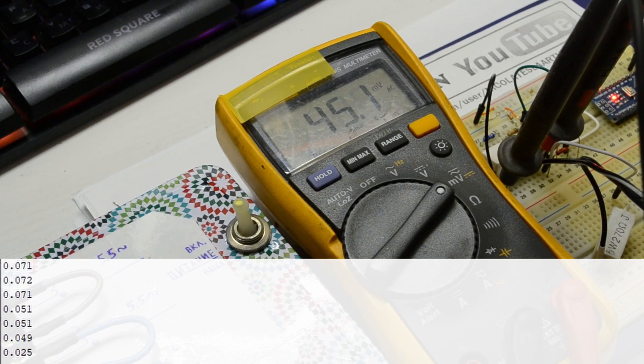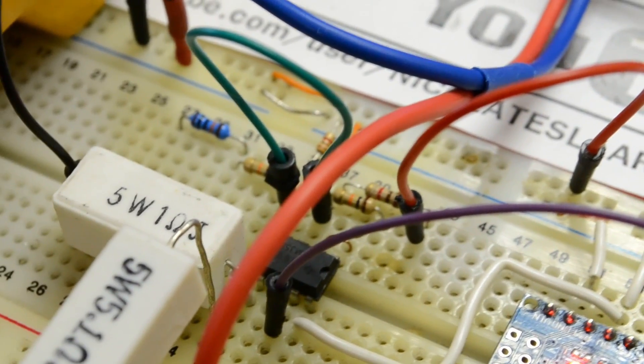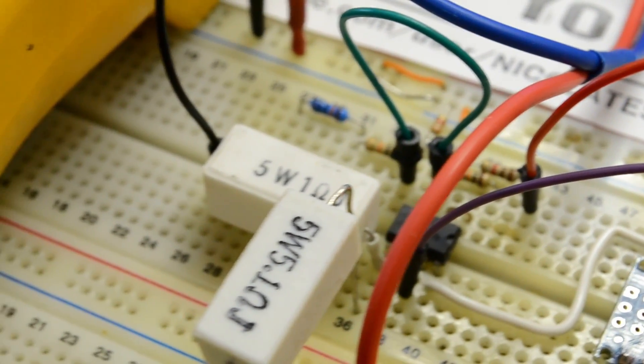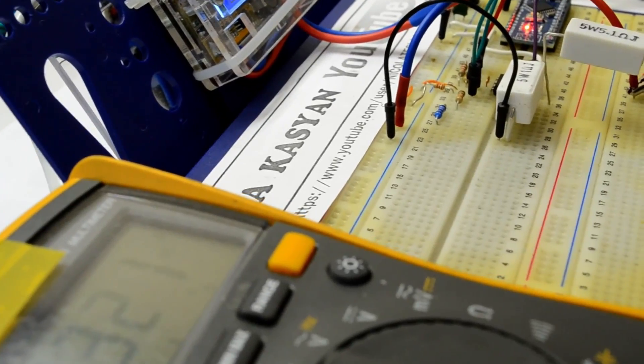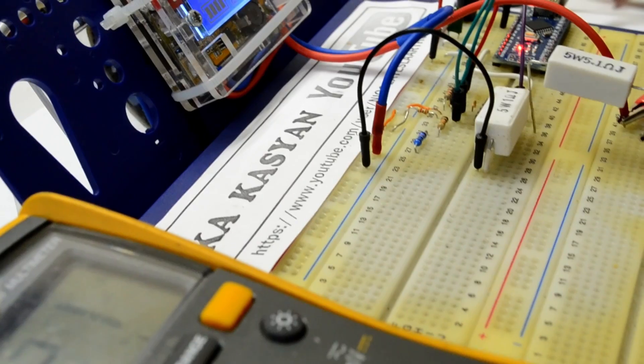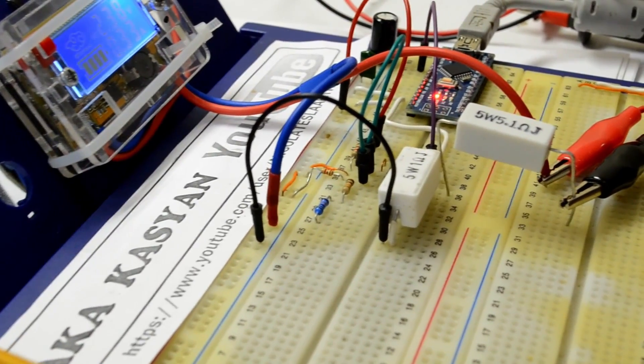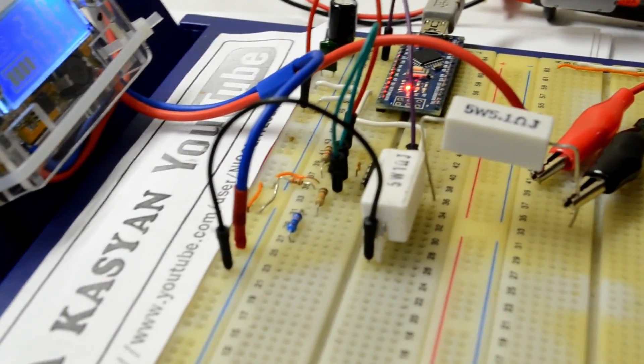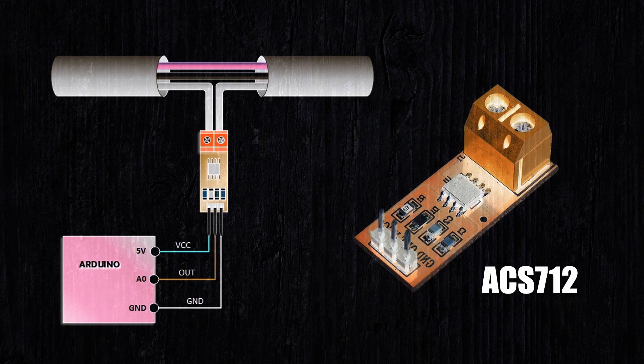It is worth noting that this approach is good for one-time current measurements and if you need to constantly monitor it, it is better to use special microcircuits. Their work is based on the Hall effect and can measure both direct and alternating current. And most importantly, the use of such microcircuits will provide electrical isolation from your circuit with the measured contacts.